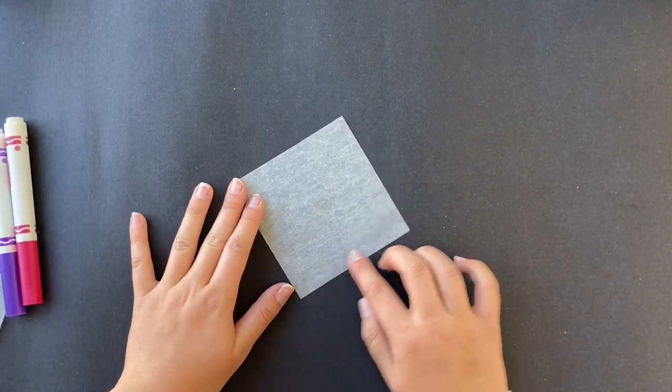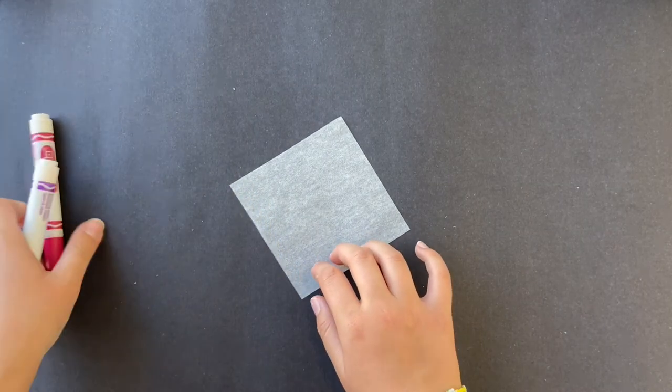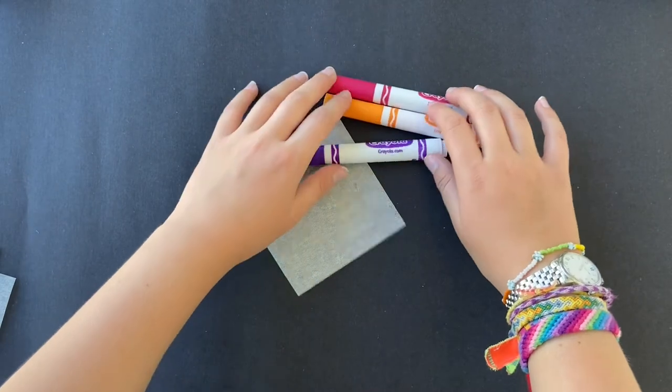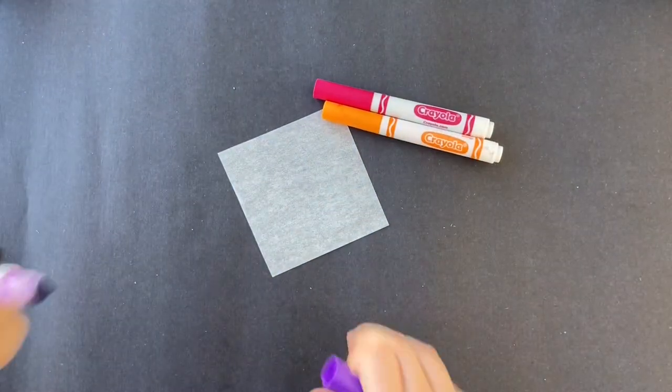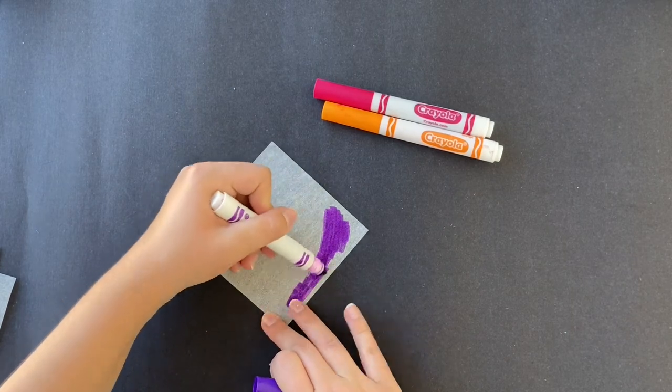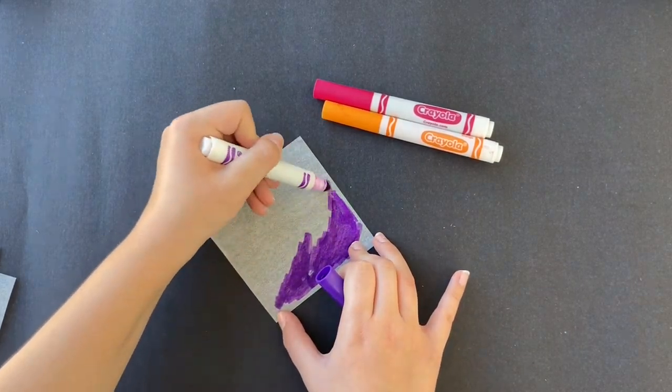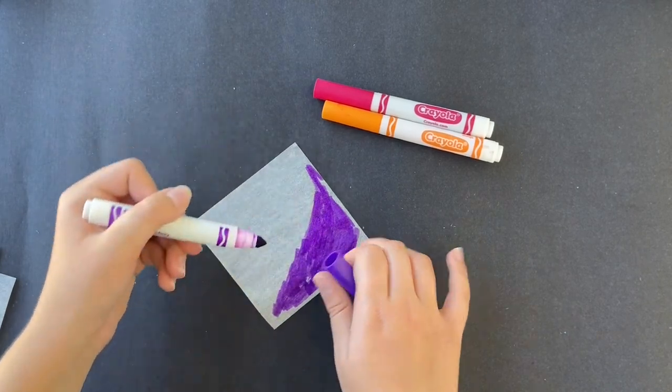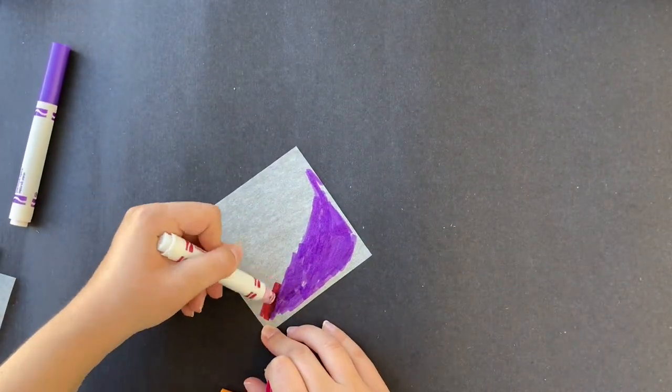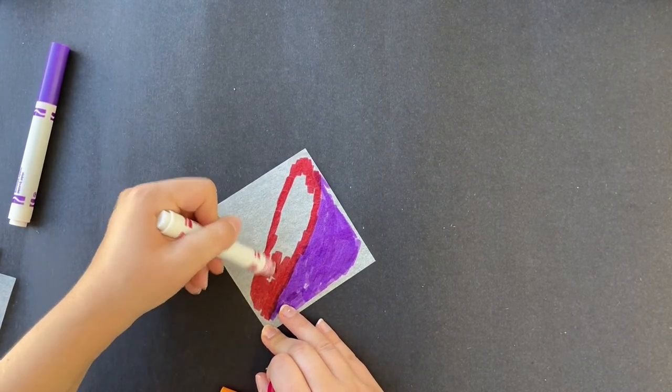Here I am grabbing a piece of parchment paper. It's about four inches by four inches. I'm grabbing my markers and I'm just going to begin coloring in random patterns. Here I have sort of stripes, but you can do random shapes. Just make sure you fill up the whole piece of paper.